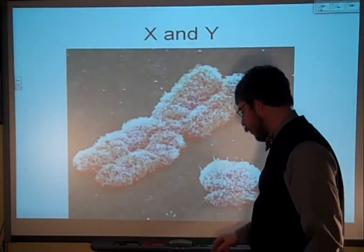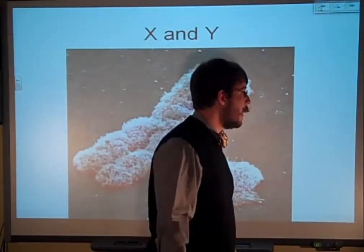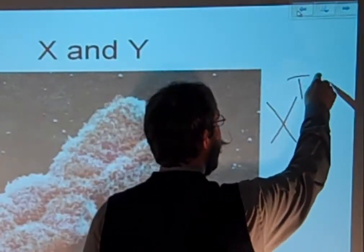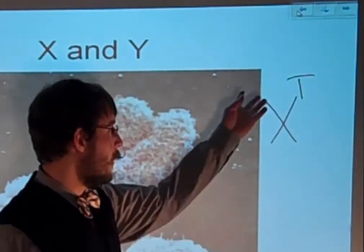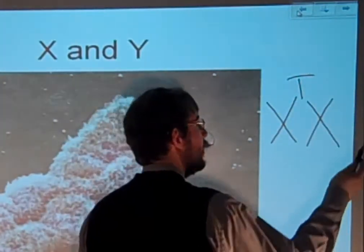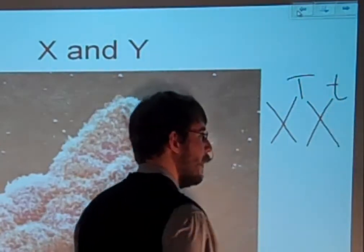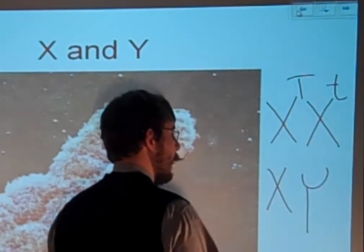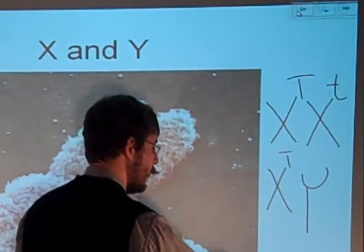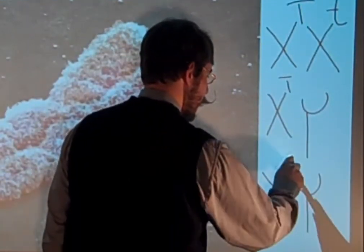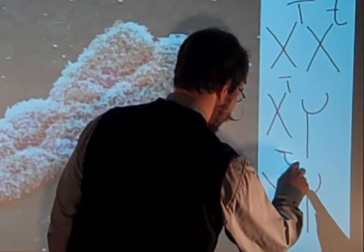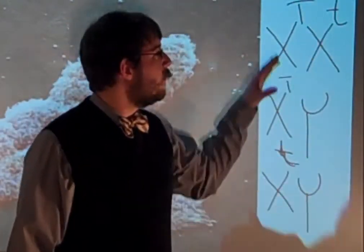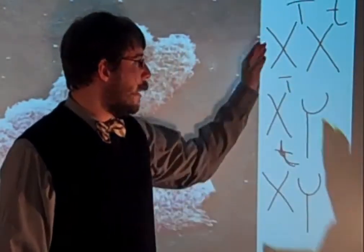Now, while we're talking about X and Y-linked traits, there's a specific notation you need to pay attention to. When showing an X-linked trait, let's use T for trait — you write the X with a superscript T. That would be the dominant version. If we're showing a lady who's XX, her other X might have the recessive version, shown as lowercase t. That's how you always show it.